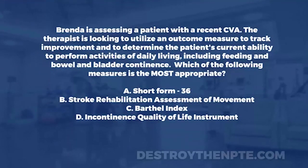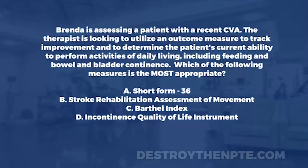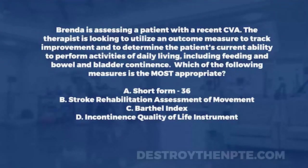The therapist is looking to utilize an outcome measure to track improvement and to determine the patient's current ability to perform ADLs. We need to ask ourselves what that really means — we need a functional outcome measure. I need to use a functional outcome measure because I'm looking for ADLs, including feeding and bowel and bladder continence. Something that's functionally based.